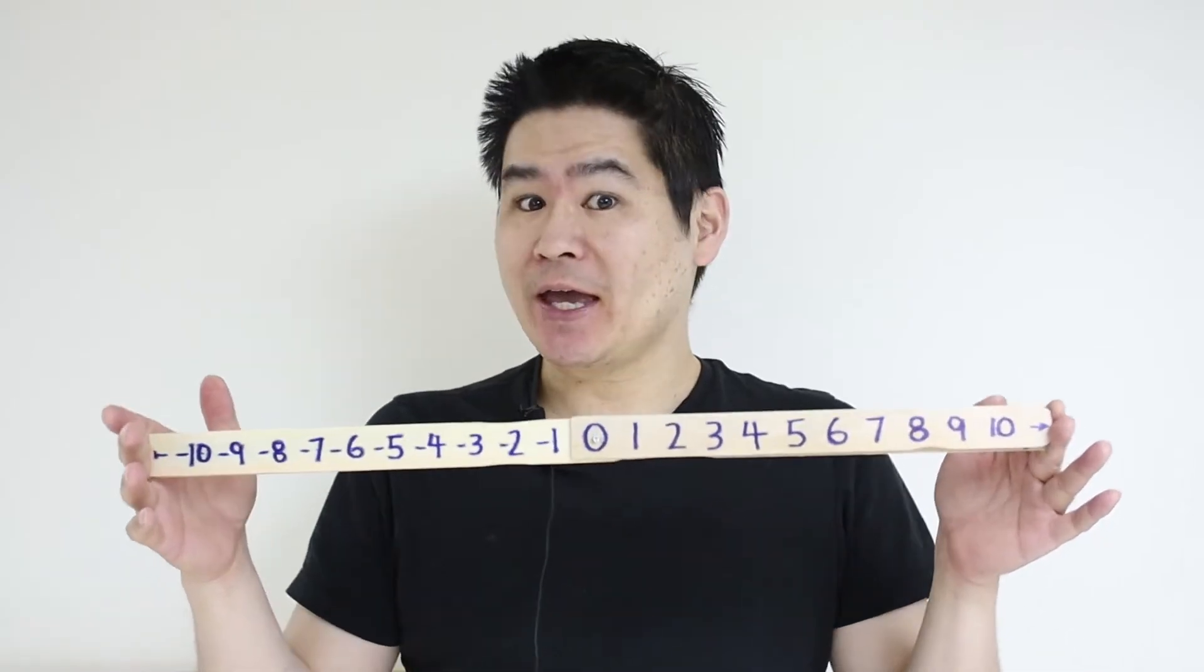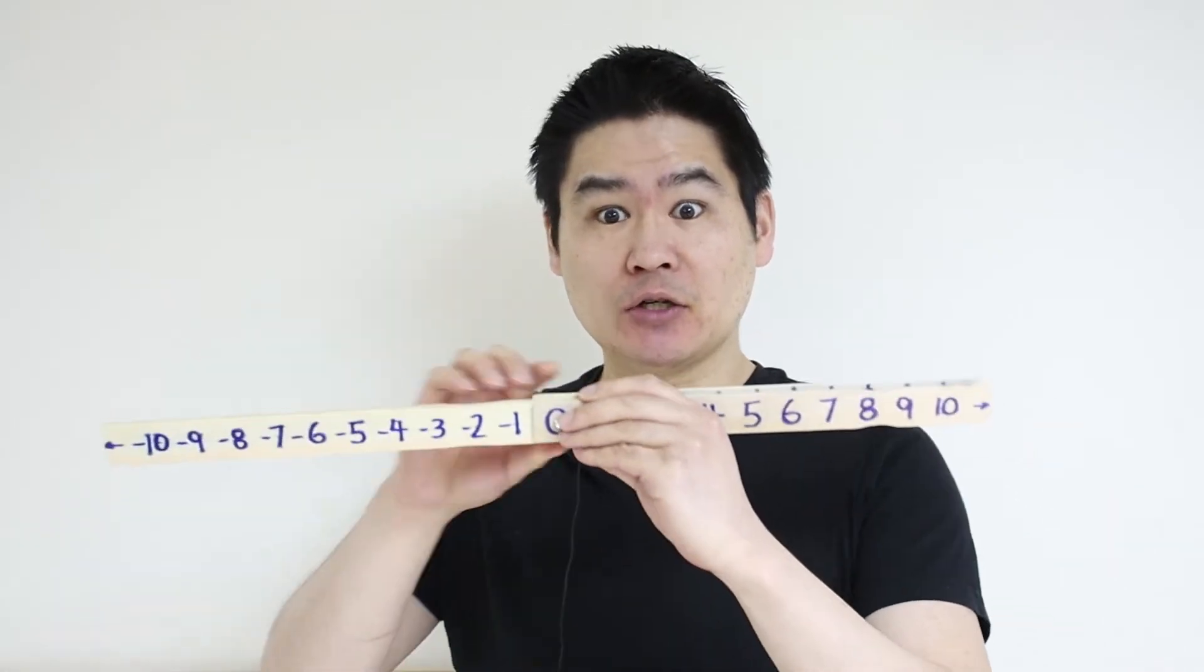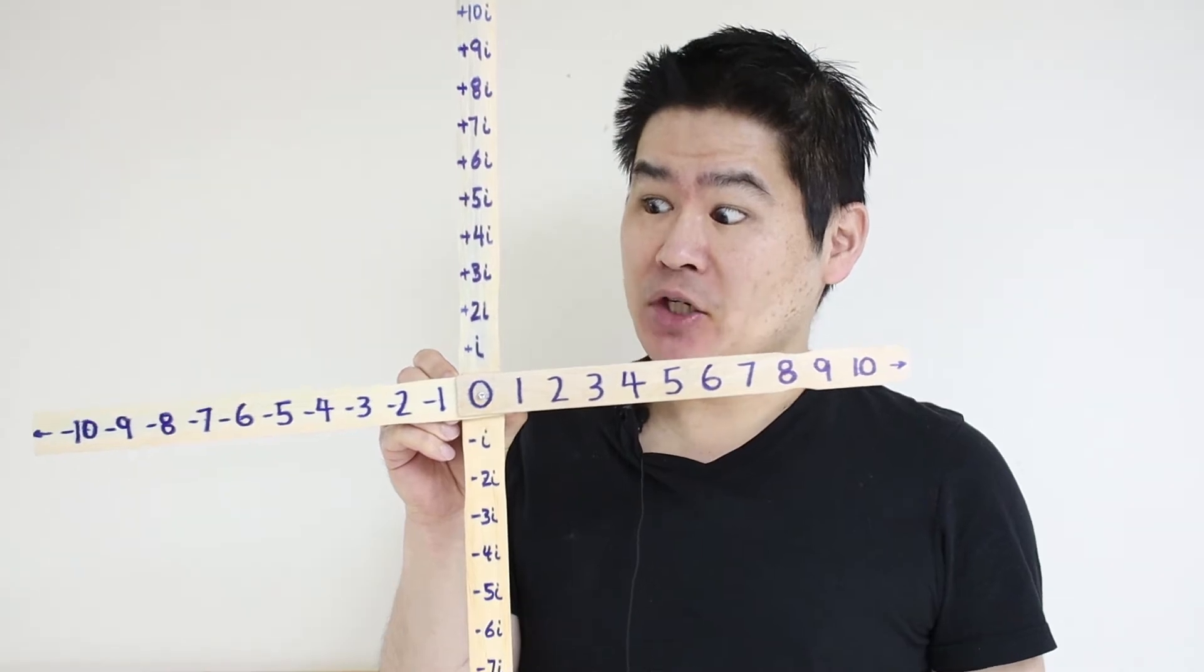But where is i on this number line? Well, to answer that question, we can't treat the number line as one dimension anymore. We need to phase shift into the other dimension, the imaginary dimension.